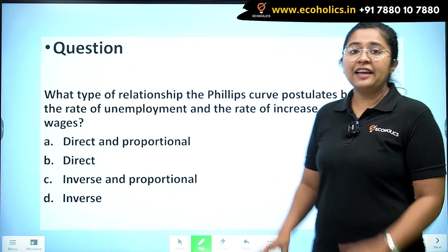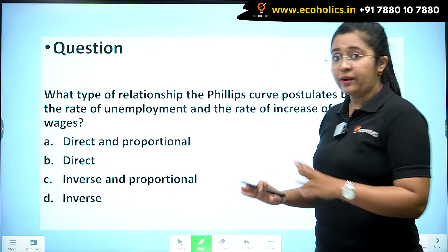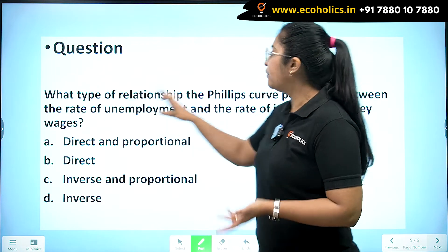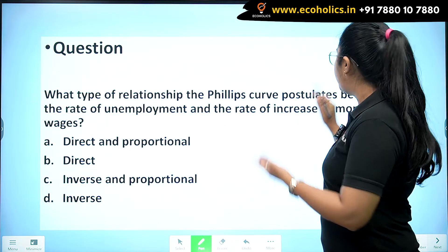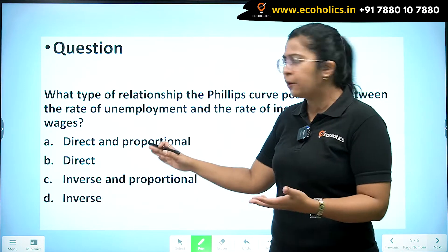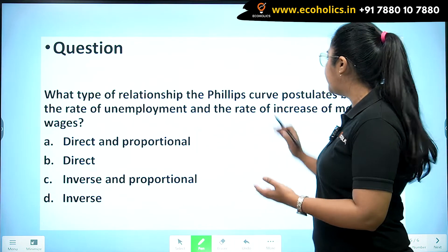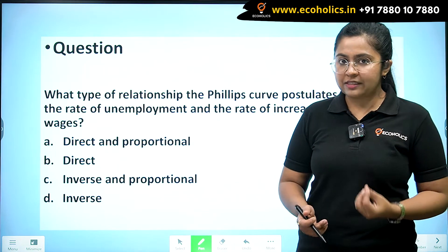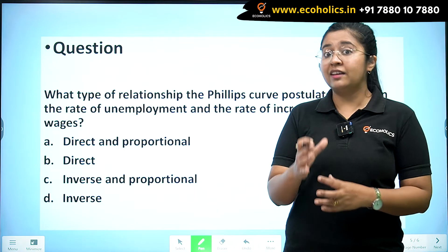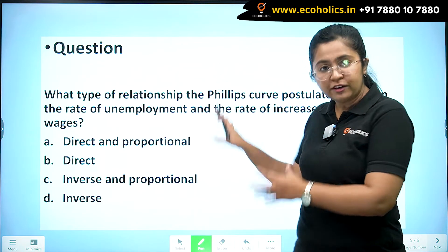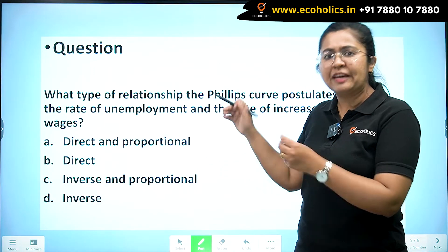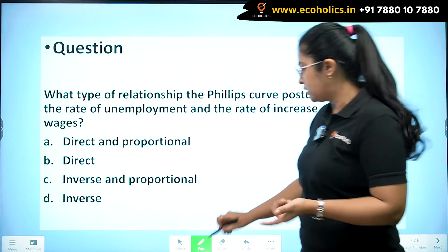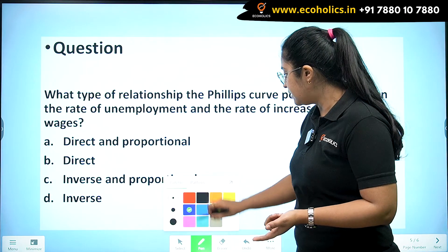Let's analyze the question. What type of relationship does the Phillips curve postulate between the rate of unemployment and rate of increase of money wages? It's a very simple concept but there are some tricky things that have been introduced in this very basic question.